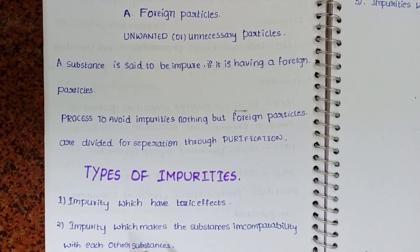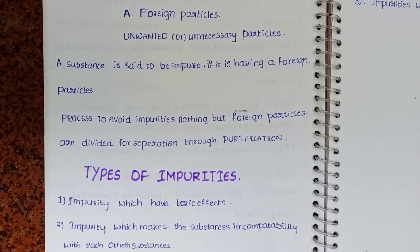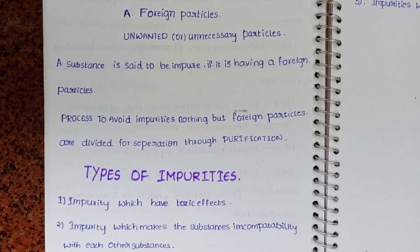The second type is impurities which make substances incompatible with each other. When an impurity is present, it affects the combining nature of the drug — nothing but the solubility of the drug. There is no combining nature of the drug, and that is called incompatibility.